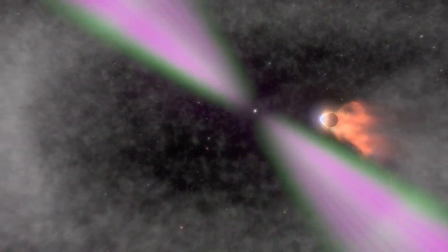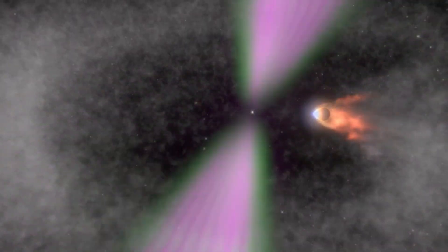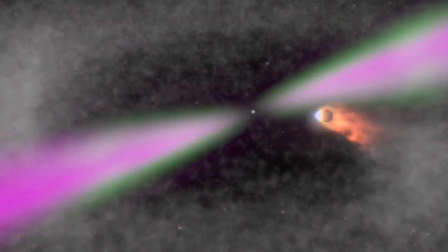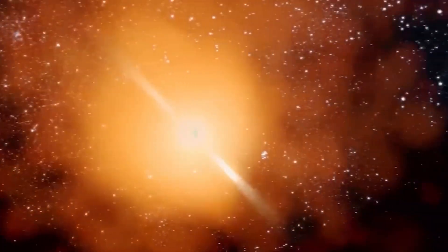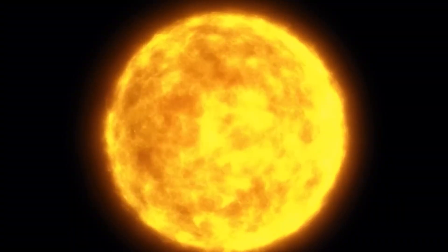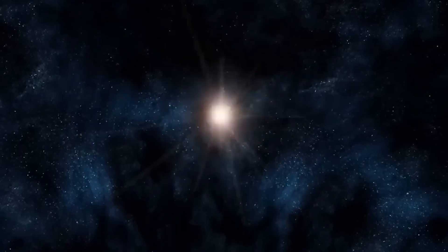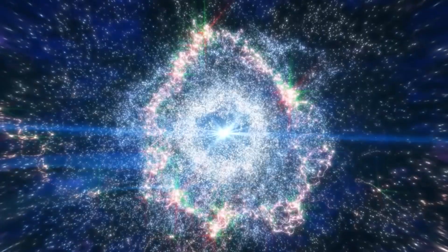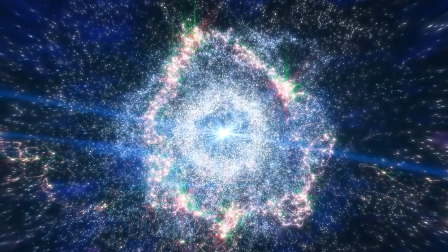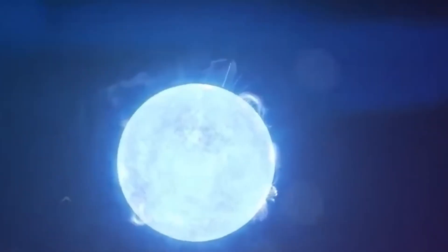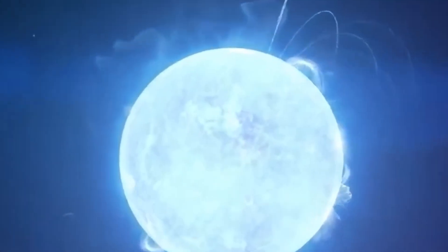And if that wasn't strange enough, there are the so-called black widow pulsars. These sinister objects earn their name by slowly devouring their companion stars. As they spin, they blast their neighbors with streams of deadly radiation, stripping away their mass bit by bit until nothing remains. Scientists even speculate about more exotic possibilities—stars made not just of neutrons, but of even stranger particles like quarks. If those exist, they could unlock entirely new physics. Every type of neutron star is like a different chapter in a cosmic horror story, each one more extreme than the last.